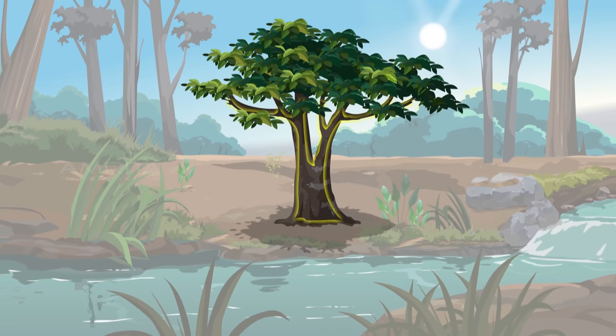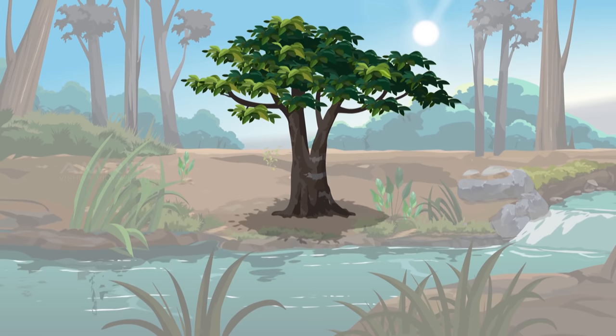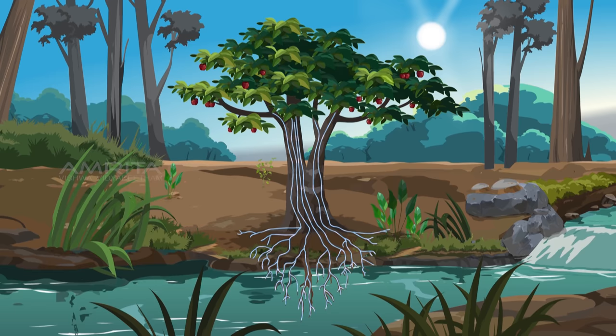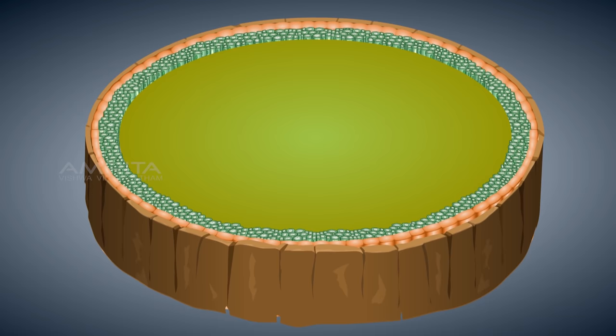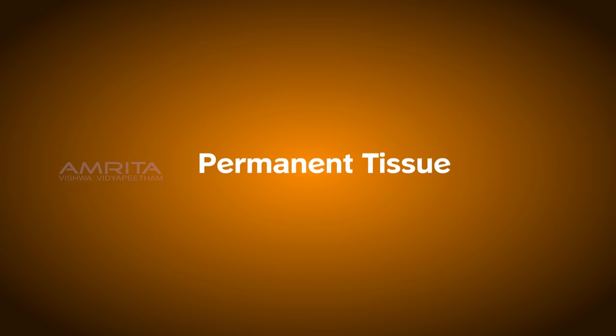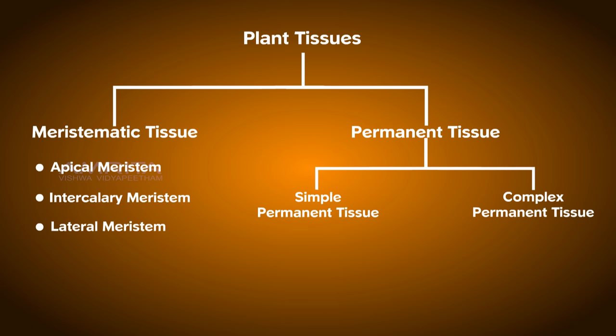We now know how a plant develops its roots, stem, leaves and branches. Now let's find out which type of tissues help plants to obtain necessary nutrition and support. It is the permanent tissues that help in transport, preparation of food and provide support for the plants. Permanent tissues are meristematic tissues that have matured and become differentiated to form different types of tissues. Based on the similarity of the cells, permanent tissues are classified into simple permanent and complex permanent tissues.